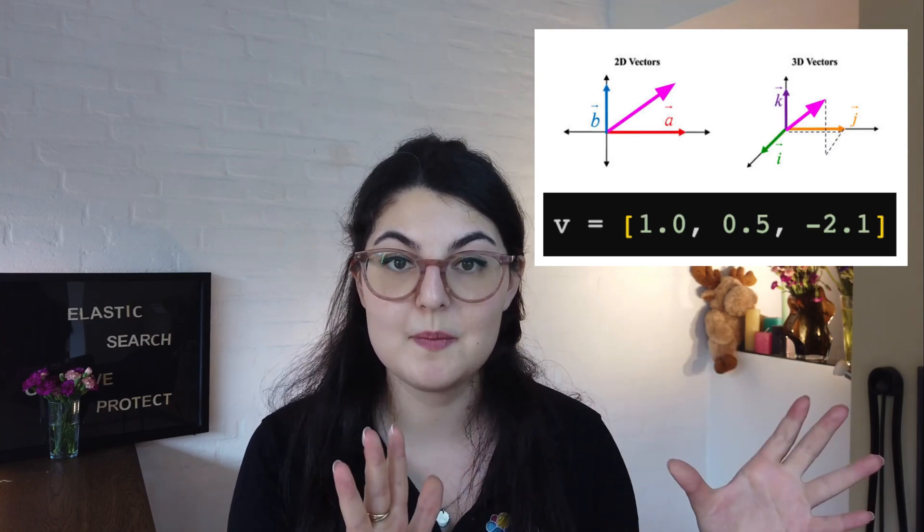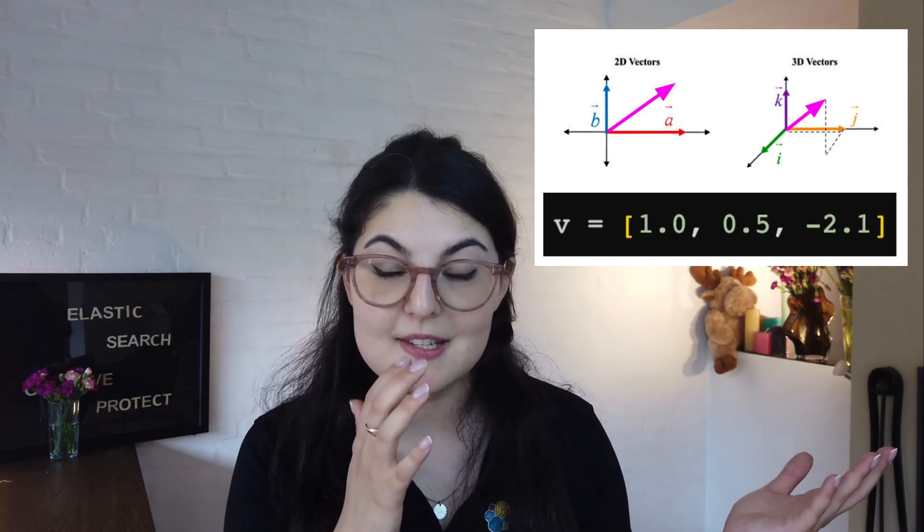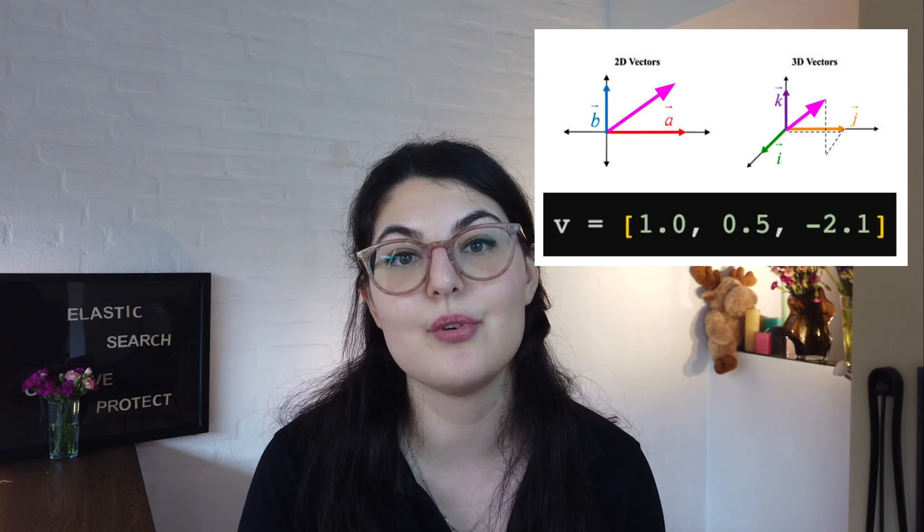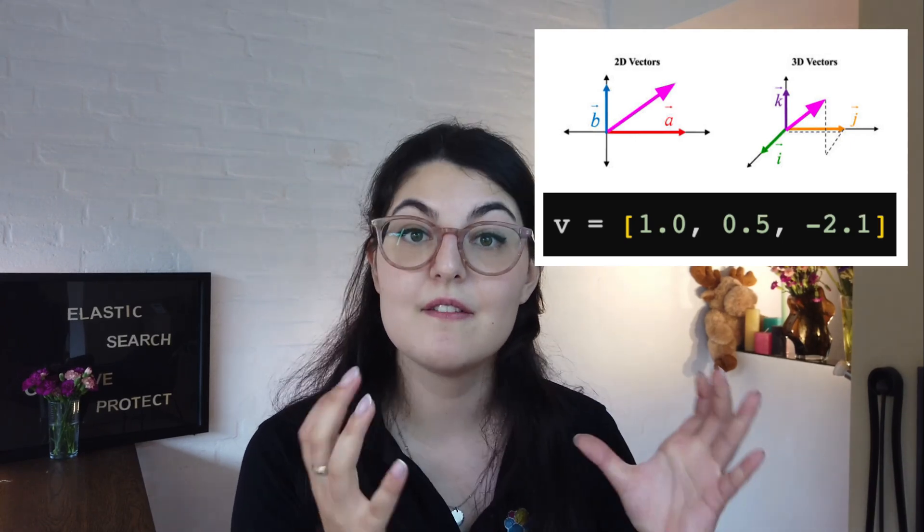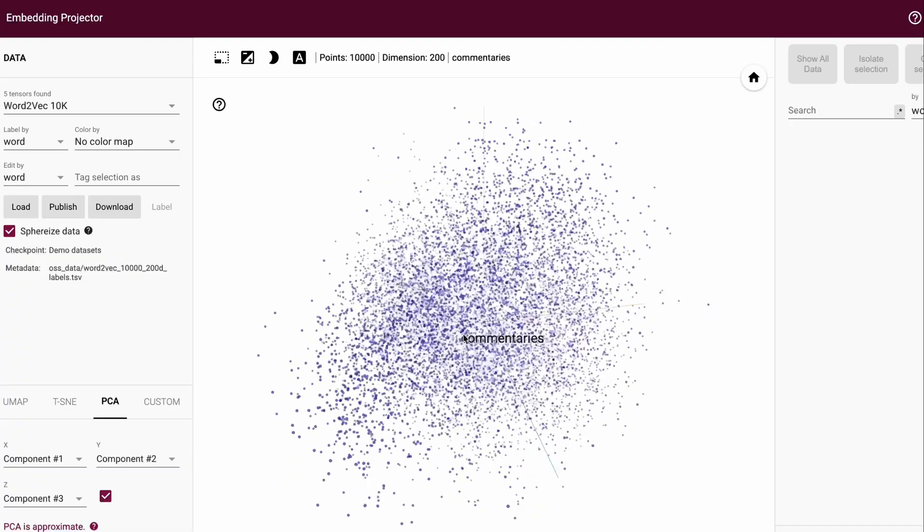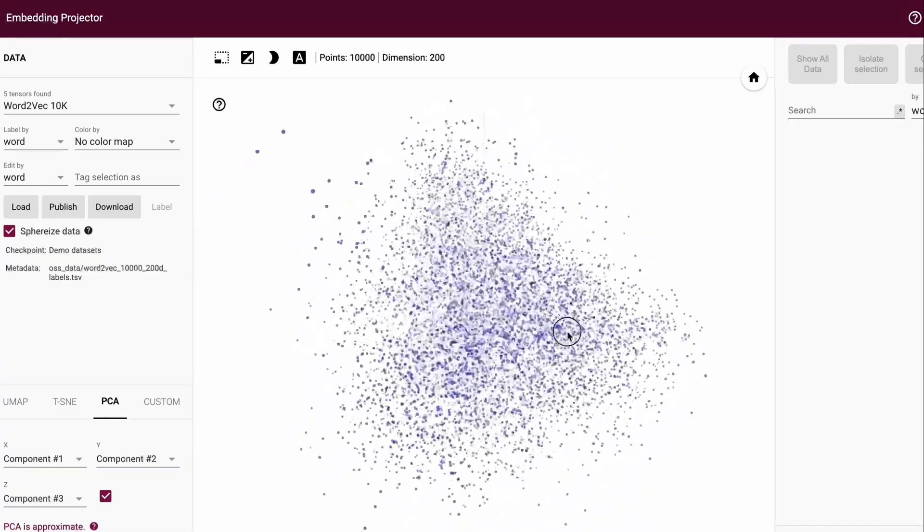We're able to plot those data points into a 2D space, into a 3D space, and so on and so forth. If we have a multitude of dimensions, it becomes a really complex vector space that we can't really visualize with our human math understanding.